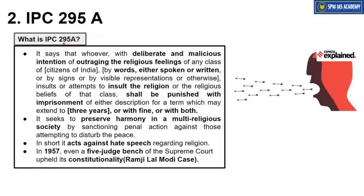What is IPC 295A? This section of the Indian Penal Code says that whoever with deliberate and malicious intention of outraging the religious feeling of any class of citizens of India, by words either spoken or written, or by signs, or by visible representation, insults or attempts to insult the religion or religious beliefs of that class, shall be punished with imprisonment for a term which may extend to three years, or with fine, or with both.